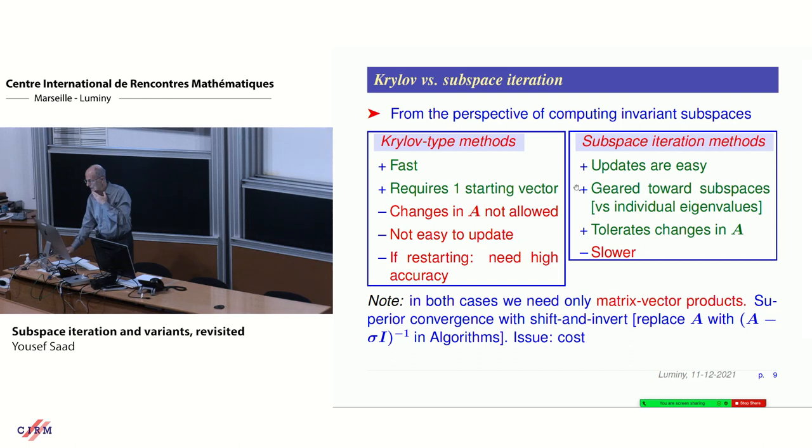So subspace iteration, on the other hand, has advantages. Updates are easy. It really is something geared towards subspaces, and it tolerates changes in A. All I'm talking about here is the context where you only need to use matrix vector products. You could do something better if you can solve, like shift and inverse and so on.